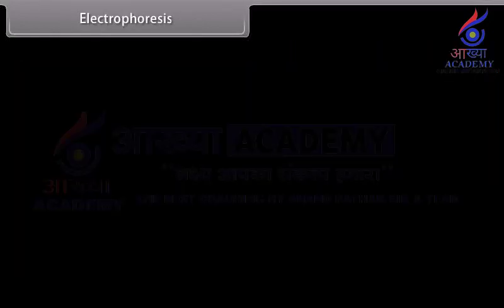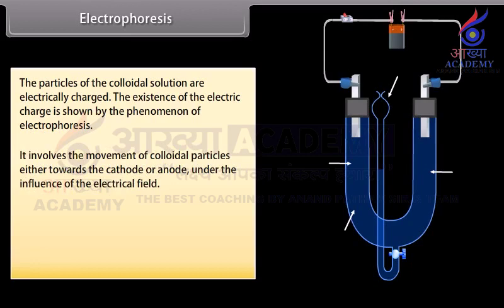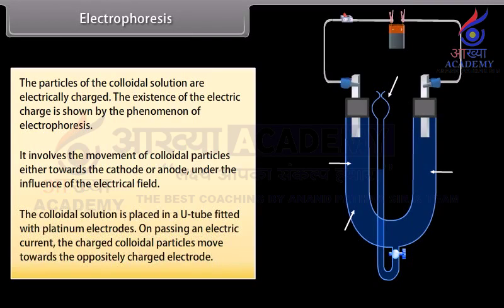Electrophoresis. The particles of the colloidal solution are electrically charged. The existence of electric charge is shown by the phenomenon of electrophoresis, which involves the movement of colloidal particles either towards the cathode or anode under the influence of an electrical field. The colloidal solution is placed in a U-tube fitted with platinum electrodes; on passing an electric current, the charged colloidal particles move towards the oppositely charged electrode.